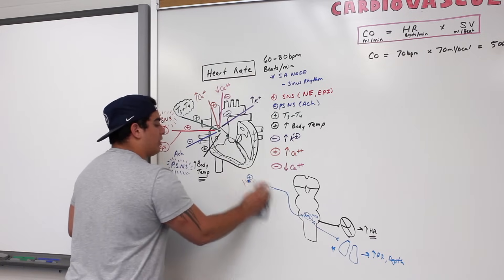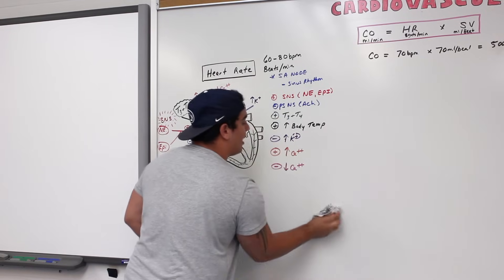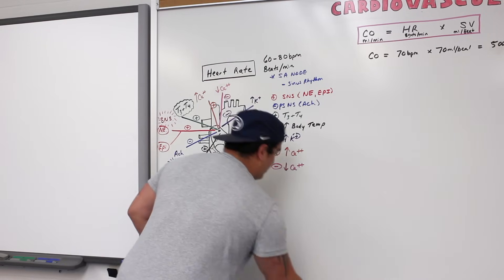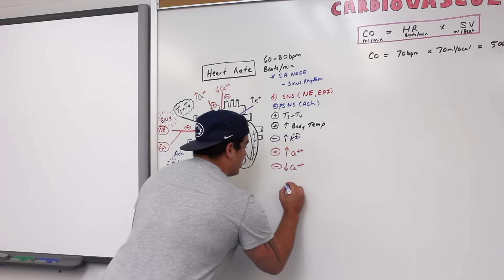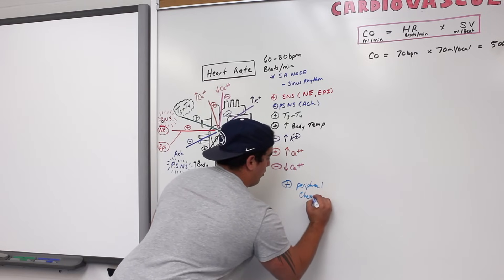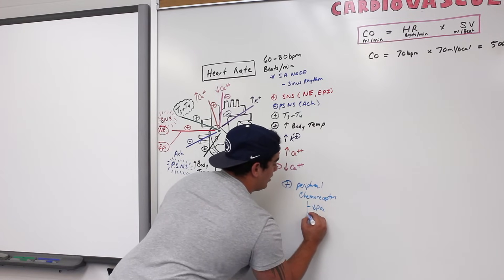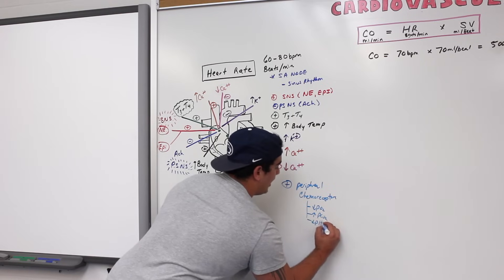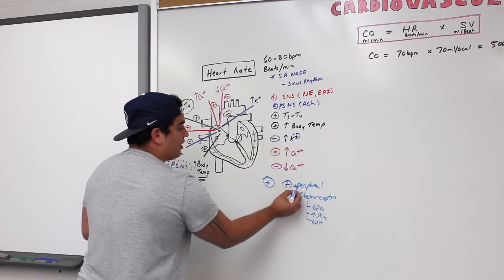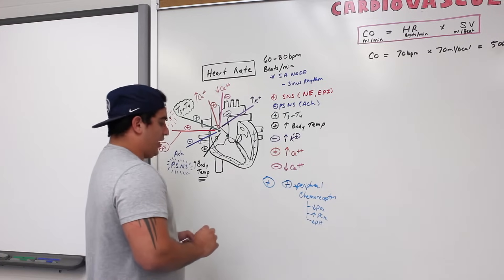To summarize: stimulation of peripheral chemoreceptors due to low partial pressure of oxygen, increased partial pressure of CO2, or a decrease in pH will stimulate an increase in heart rate.